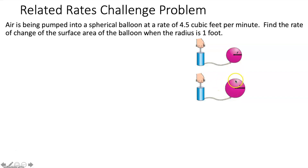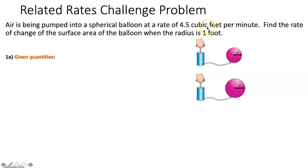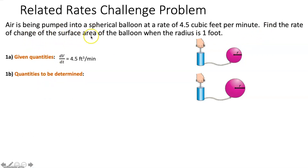Because there are no other measures in this sphere that are changing or constant, we can move on to stating all given quantities and quantities to be determined. We are given that air is being pumped into the balloon at a rate of 4.5 cubic feet per minute. Because it's cubic feet, it's the rate at which volume is changing, so dV/dt equals 4.5 cubic feet per minute. We are trying to find the rate of change of the surface area — dS/dt — when R equals 1 foot.